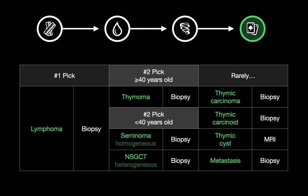If it doesn't look like thymic hyperplasia, you're off to step four — go with the odds. Your number one pick is lymphoma. Number two and three are thymoma and germ cell tumors, the order depending on the patient's age. The workup and recommendations generally involve some sort of referral to surgery or biopsy. The most common anterior mediastinal mass in virtually all age groups is lymphoma, so look for evidence of lymphoma elsewhere and check for B symptoms in the chart.